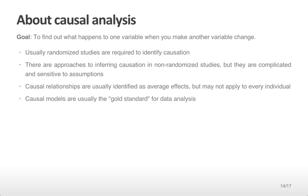The next kind of analysis is causal analysis. Here, the goal is to find out what happens to one variable when you actually force another variable to change. To understand causal relationships, we usually require a randomized study. There are approaches to inferring causation in non-randomized studies, but they are complicated and sensitive to assumptions. Causal relationships are usually identified as average effects, but may not apply to every individual.